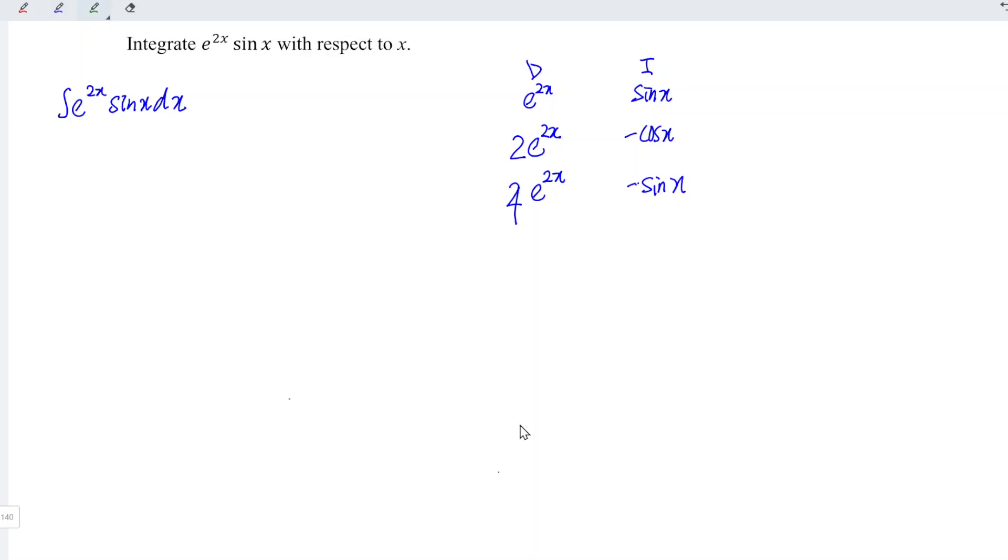Since we obtain the common functions as the first row, where we have e to the power of 2x under D and sin under I, we can stop here and determine the joint function.